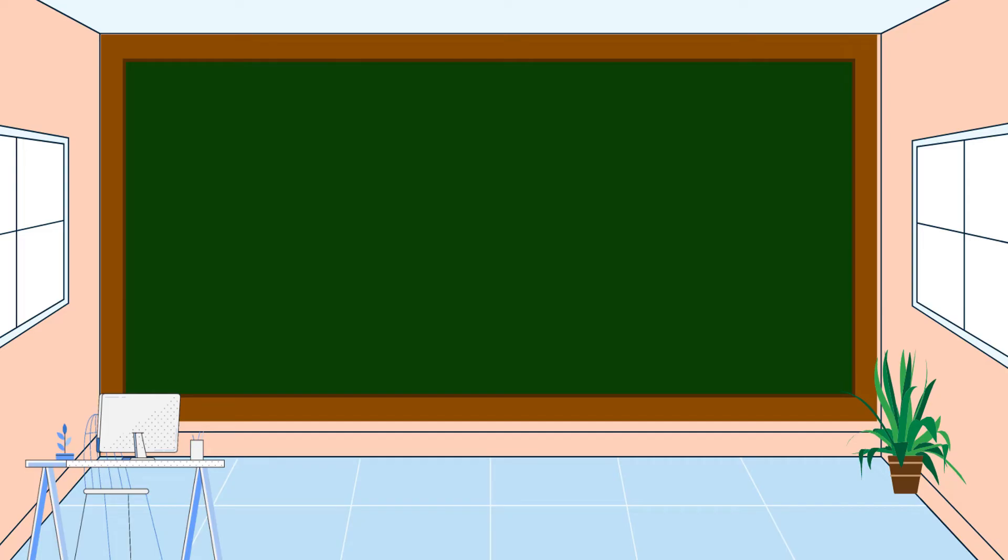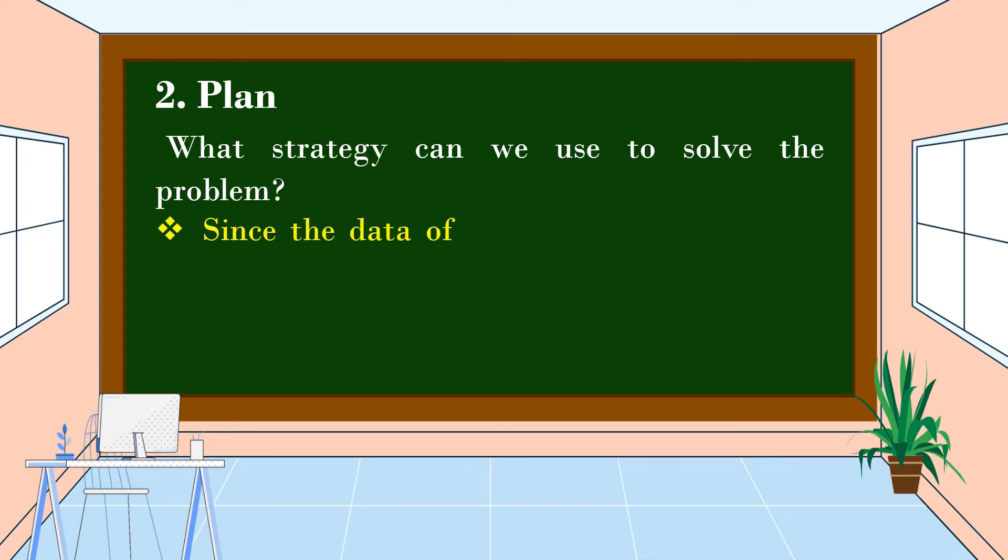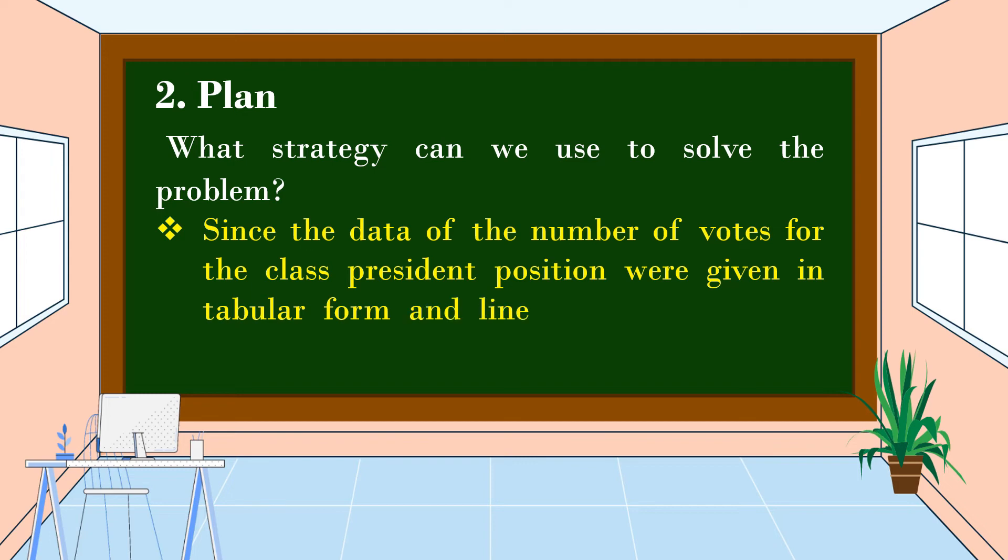So, what is the next step? Alright, the next step is we're going to make a plan. What strategy can we use to solve the problem? Since the data of the number of votes for the class president position were given in tabular form and line graph, we can use addition.